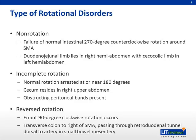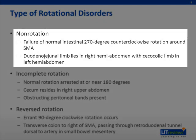There are several types of rotational disorders. Non-rotation is defined as the failure of the normal intestine 270 degree counterclockwise rotation around the SMA. In non-rotation, the duodenal-jejunal limb lies in the right hemiabdomen with the cecocolic limb in the left hemiabdomen.